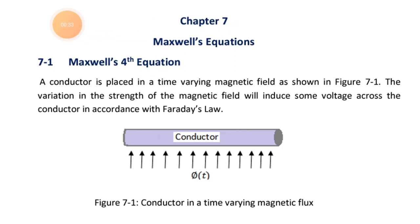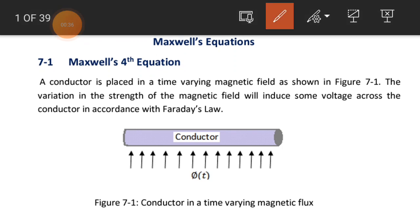We derive the fourth equation of Maxwell with the help of Faraday's law. Faraday's law states that if you want to generate voltage, we need to have a magnetic field and a conductor. If the strength of the magnetic field is changing with respect to time, we need to place the conductor stationary in the time-varying magnetic field, and the variation will induce some voltage across the conductor. If the magnetic flux is not varying with time, then we need to rotate or move the conductor inside the constant magnetic field.